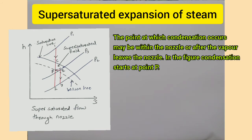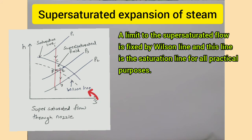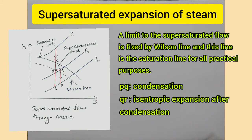The point at which condensation occurs may be within the nozzle or after the vapour leaves the nozzle. In the figure, condensation begins at point p. The vapour between point c and point p is said to be superheated and also in a metastable state. Such type of flow in nozzles is known as supersaturated or metastable flow. A limit to the supersaturated flow is fixed by the Wilson line, and this line is the saturation line for all practical purposes. Process p-q represents condensation and q-r represents expansion after condensation.